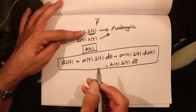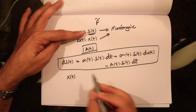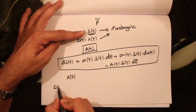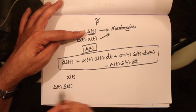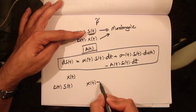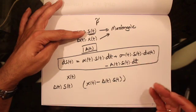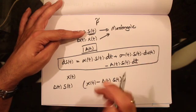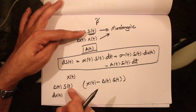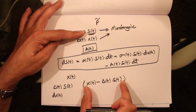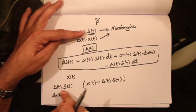Like before, we're going to construct a portfolio of dividend-paying stock and a money market account. We have some money x_t, and we're going to buy delta_t amount of stock, using delta_t * s_t amount of money. The remaining money, x_t minus delta_t * s_t, we're going to invest in the money market account. The change in the value of the portfolio will be driven by the change in the value of the stock, the interest accrued in our money market account, and a third new term: the dividend paid by the stock.